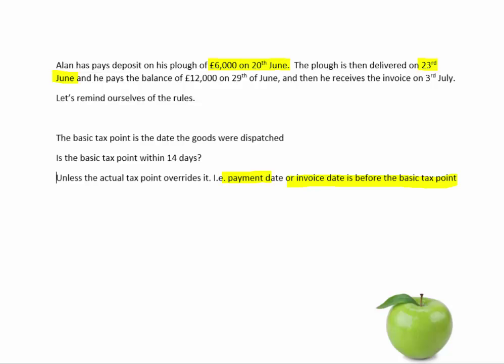The first tax point is £6,000 on the 20th of June. He then receives his invoice on the 3rd of July, which is within 14 days of the basic tax point. So the balance of £12,000 will be on the 3rd of July using the actual tax point, because the invoice has overridden the basic tax point.